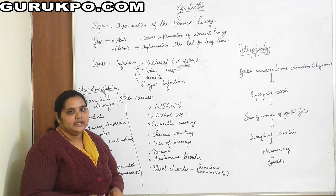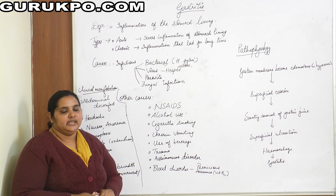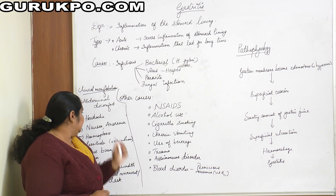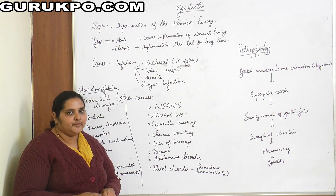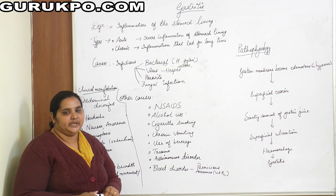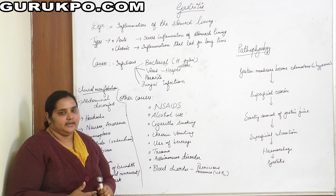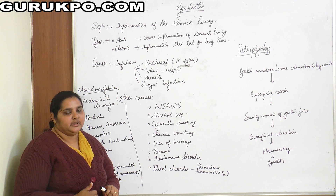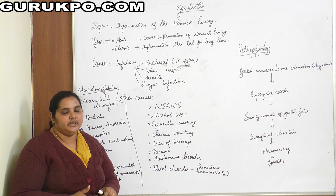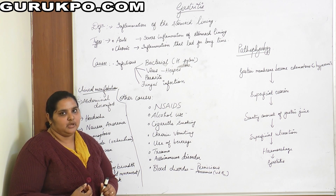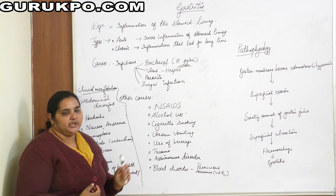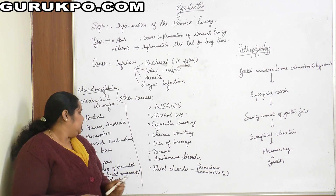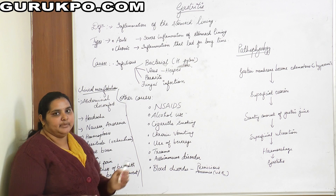Now moving to clinical manifestations. First is abdominal discomfort — the patient suffering from gastritis will experience abdominal discomfort. Then headache. Next is nausea — a sensation of vomiting — and anorexia, which is loss of appetite, meaning the person will not feel hungry. Then hemoptysis, meaning blood in the vomit due to irritation of the stomach lining. Lassitude — the patient will feel very exhausted.